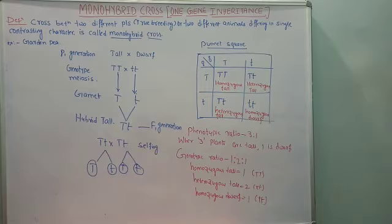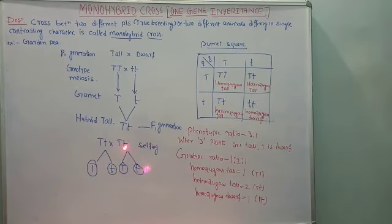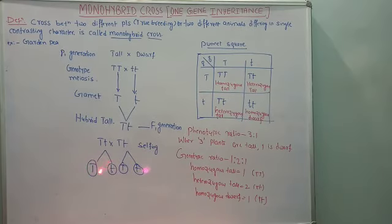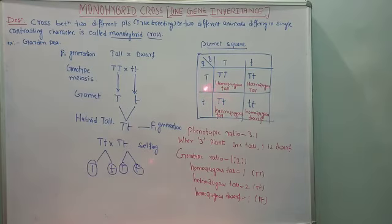After selfing, two kinds of gametes are obtained. Capital T segregates separately and small t segregates separately — thus two kinds of gametes are formed from the hybrid tall plant. These hybrid tall plants undergo selfing; during selfing, each plant produces gametes through meiosis, giving two varieties: capital T and small t. Using a checkerboard or Punnett square, Mendel crossed these gametes — male as well as female.